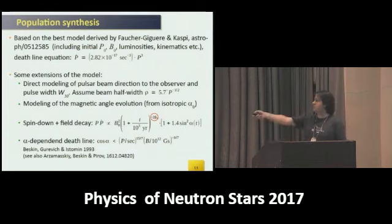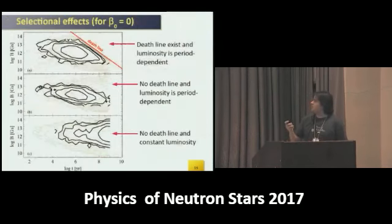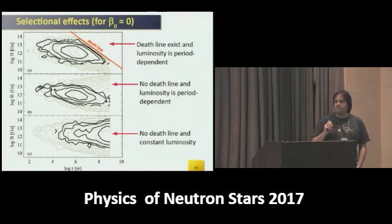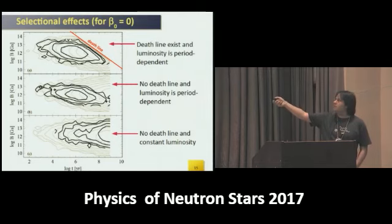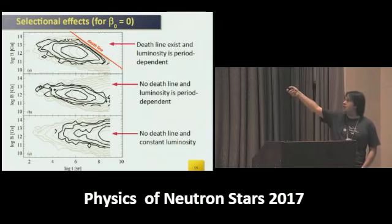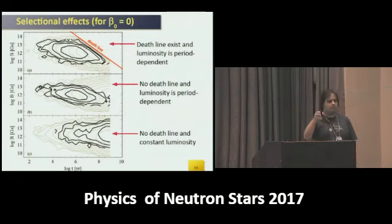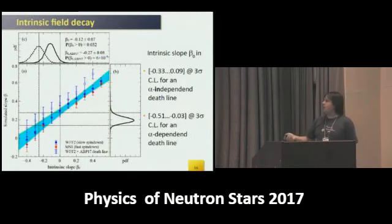We directly modeled the probability for the observer to observe the pulsar. We modeled magnetic field evolution and included magnetic field decay in the spin-down law. We also probed the death-line which is dependent on magnetic inclination angle. I'll skip some simulation details, but the two basic contributions to selection effects are the death-line, which naturally cuts the cloud of pulsars from the top, and the dependence of pulsar radio luminosity from the period and period derivative.